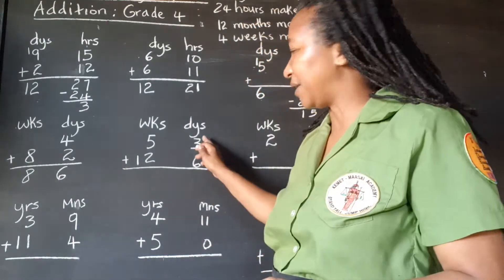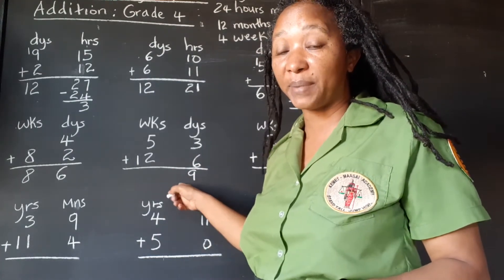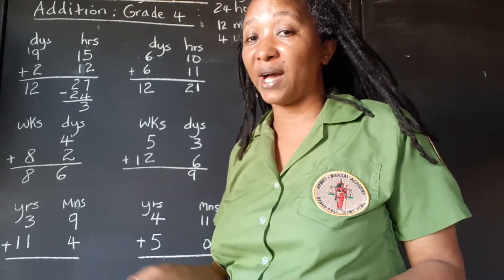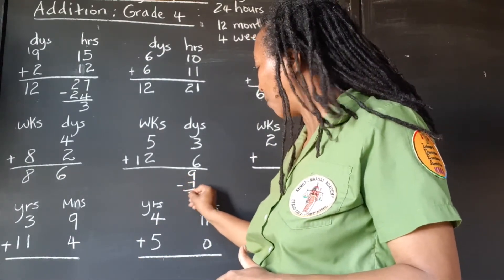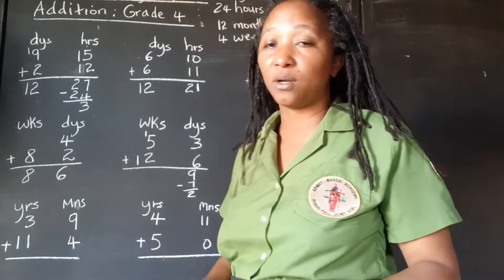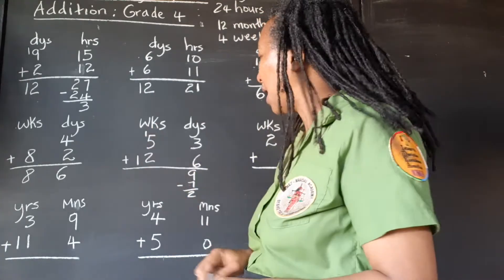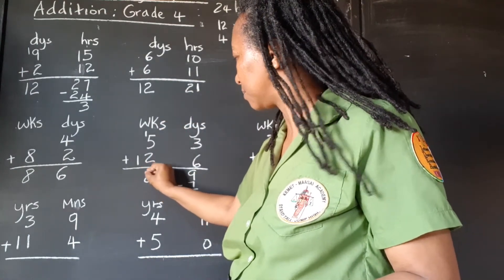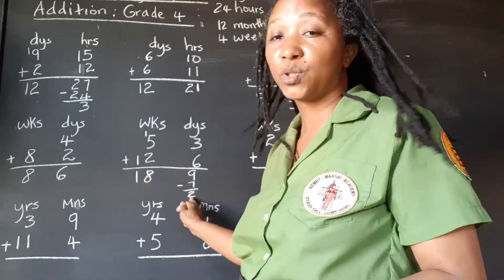When we add 3 and 6, we get 9. We have a problem here because we're not supposed to have more than 6 days. Once it's 7 or more, we have to transfer that to weeks. So we take 7 out of the 9 and we're left with 2 days. This 7 we're going to bring it over as 1 week. 7 days make 1 week. Now we add the weeks: 1 plus 5 is 6, plus 2 is 8, and we bring down the 1. So that's 18 weeks and 2 days.